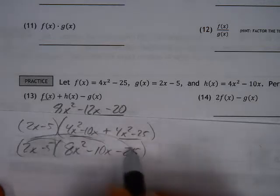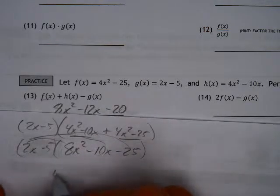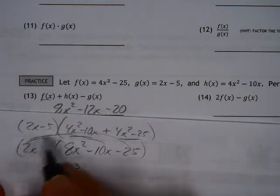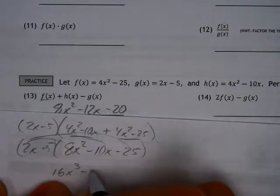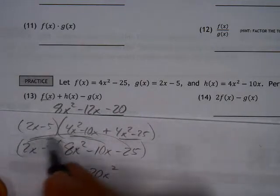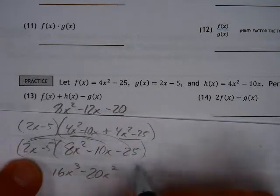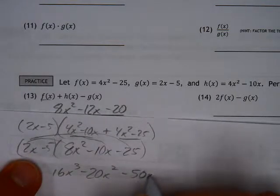The 2x gets distributed to all. 2x and 8x squared is 16x to the third. The next one is a minus 20x squared. The last, 2 times 25 or negative, negative 50x.